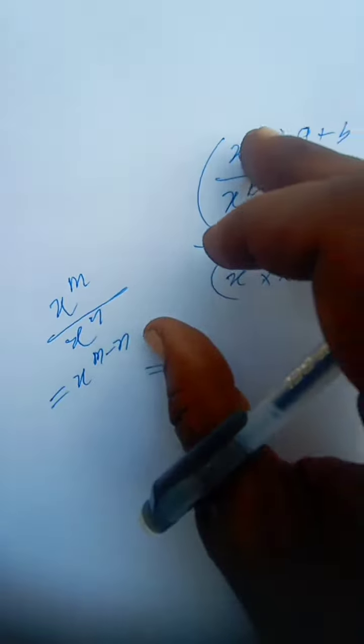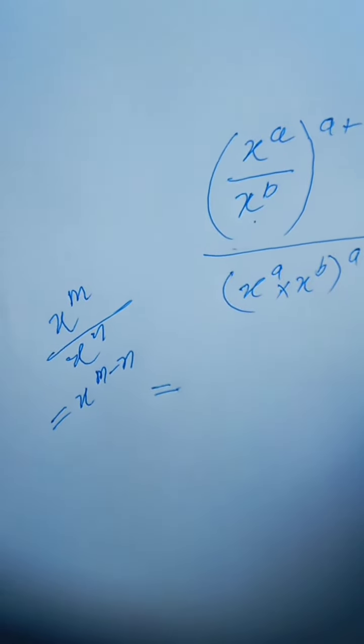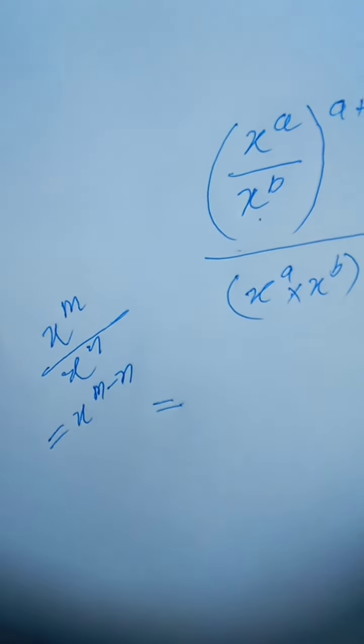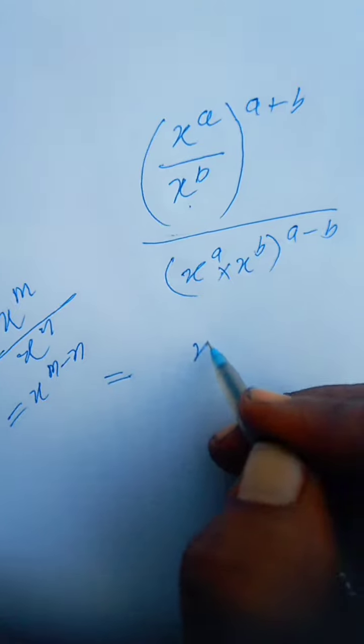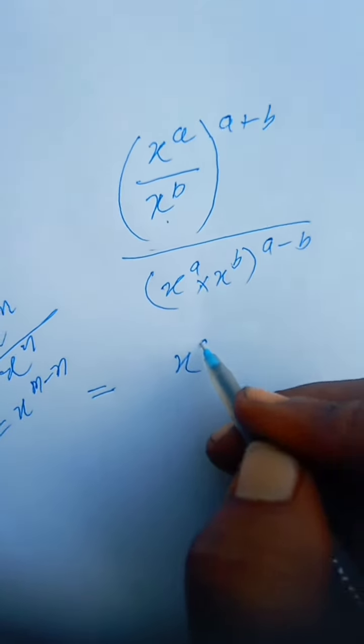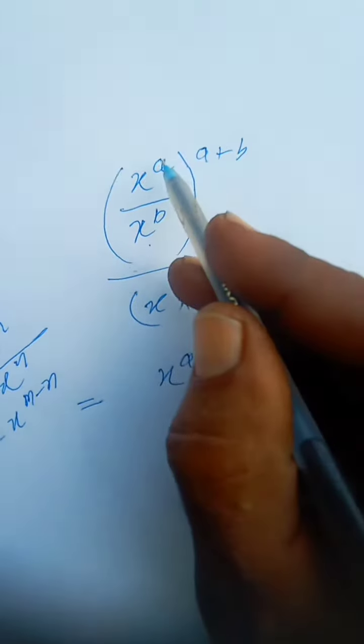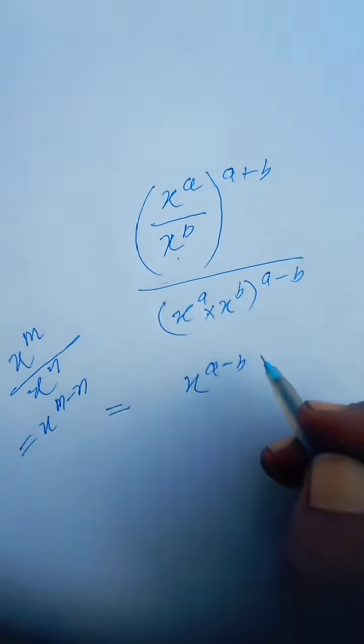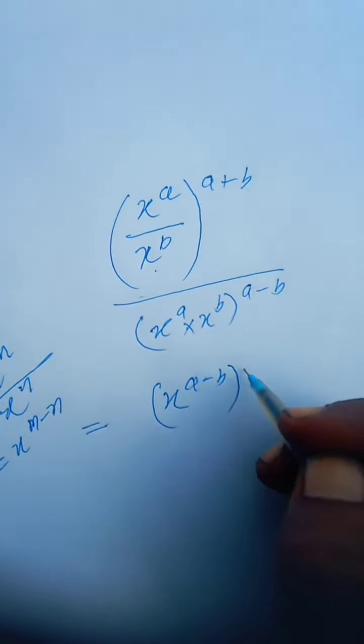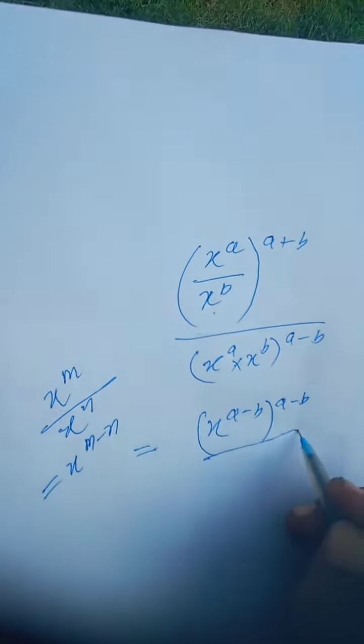It means if there is a division relation, then powers are subtracted. Here it will be x to the power a minus b. Here a minus b, like m and n power, whole power again a minus b upon...